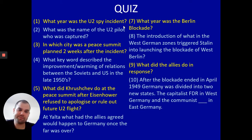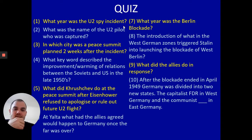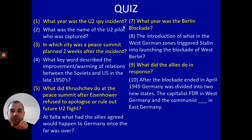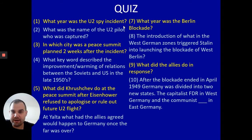Question nine: very simply, what did the allies do in response to the blockade of West Berlin? And the final question, slightly harder: after the blockade ended in April 1949, Germany was divided into two new states — the capitalist FRG in West Germany and the communist state in East Germany. What were the initials for the East German communist state set up after the Berlin Blockade?